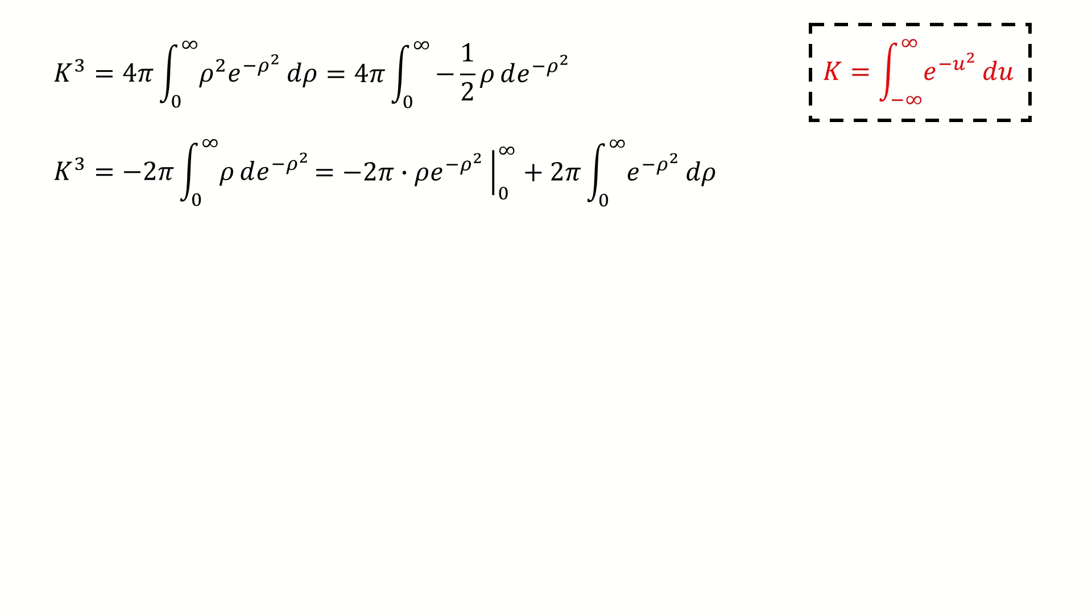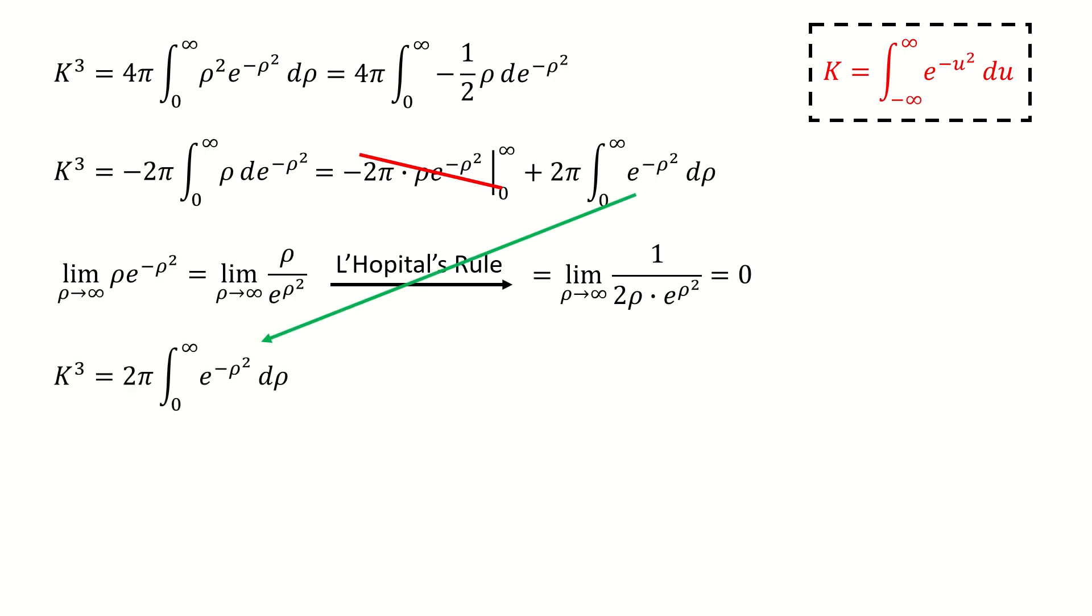For the first term, we need to evaluate it at zero and infinity. At zero, it equals to zero. At infinity, we need to calculate the limit. Because this limit is in the form of infinity over infinity, we can apply L'Hopital's rule. We got the limit equal to zero at infinity. So the first term vanishes. Then we got here.